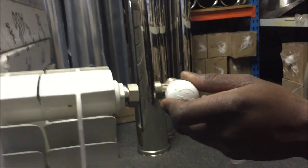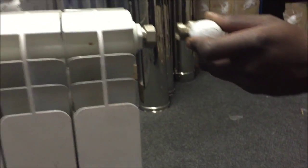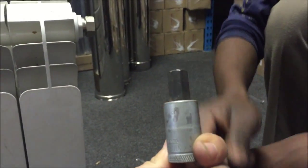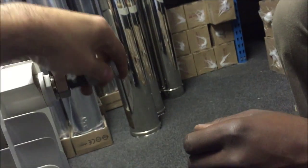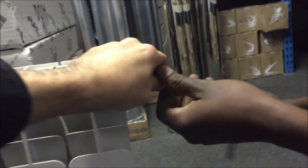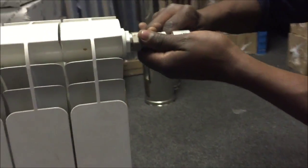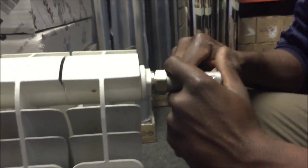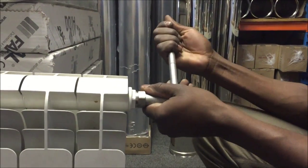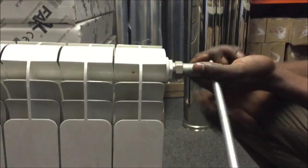Similarly, using the 12 mil hexagonal key, we unscrew the part that goes into the radiator. Just remove it.